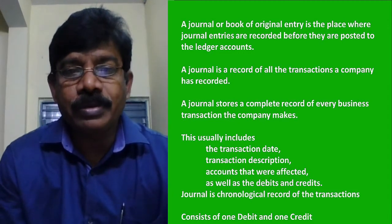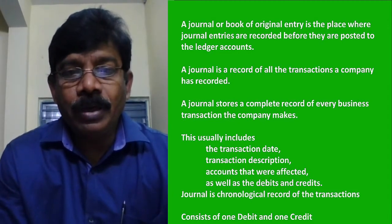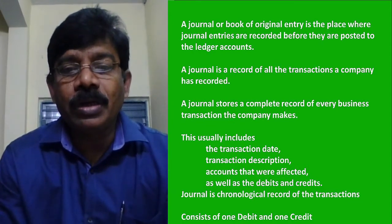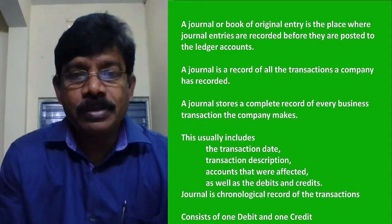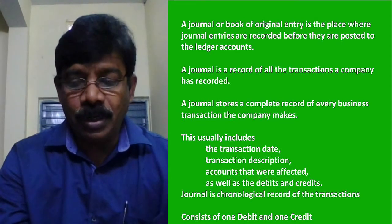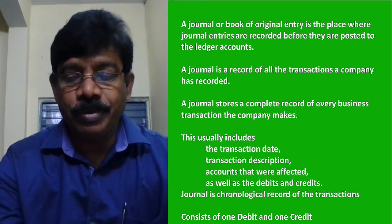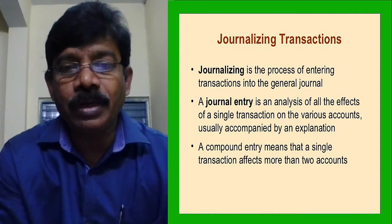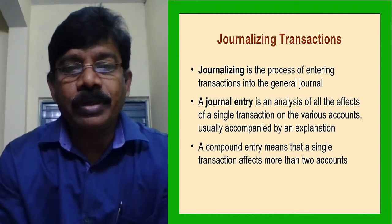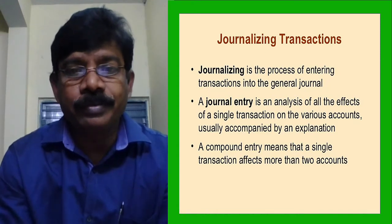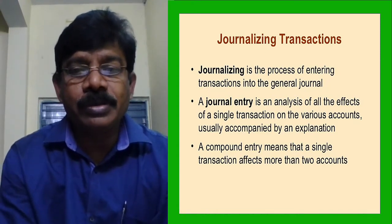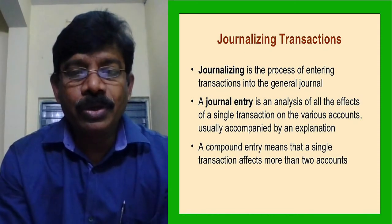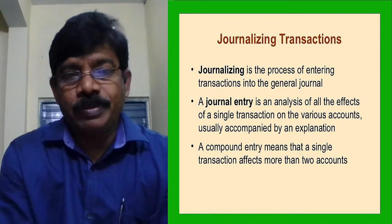We had experience writing journal entries in intermediate — January 1st, 2nd, 3rd, 4th, 5th and so on — in chronological order. A journal entry consists of debit and credit. Journalizing is the activity of passing journal entries. A journal entry is an analysis of all the effects of a single transaction on various accounts, usually accompanied by an explanation called a narration.